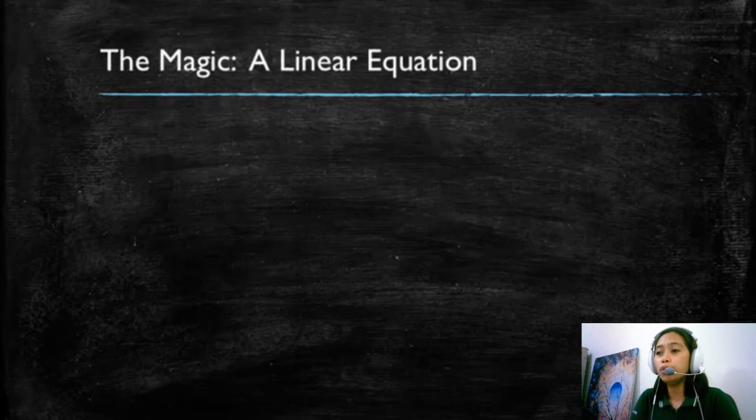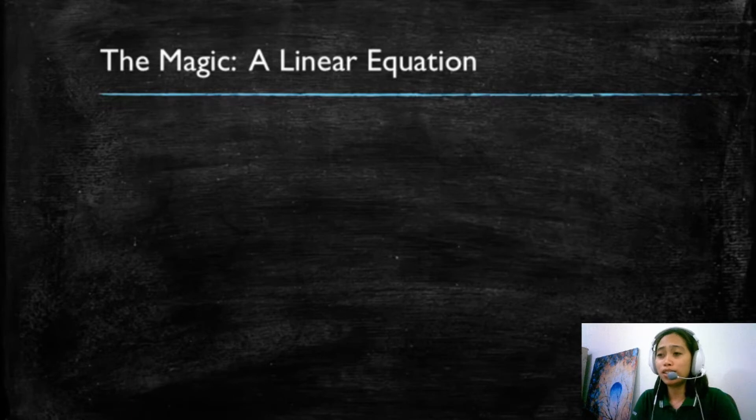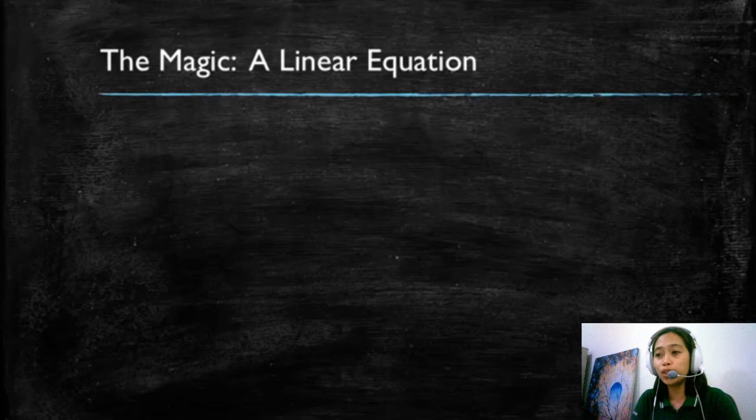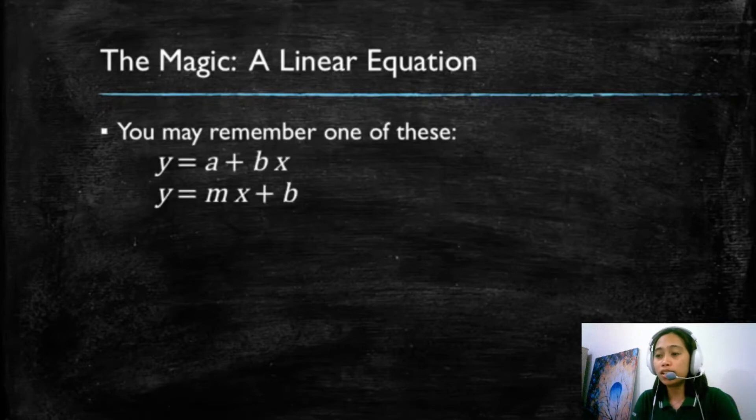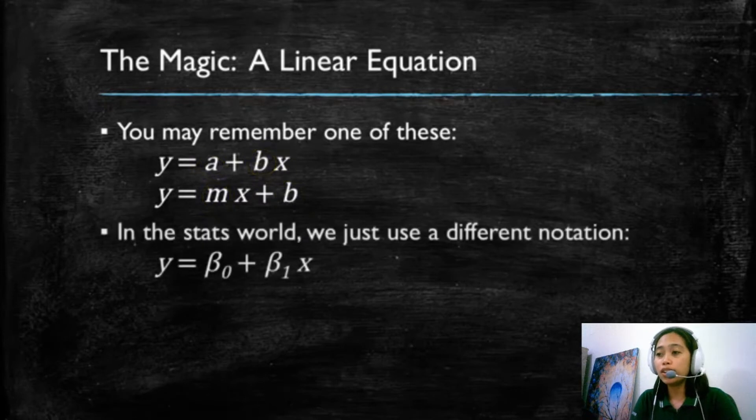So when we use simple linear regression models, we call them linear because the magic is that we're using a linear equation. And from your high school years, you might remember one of these where Y is a function of X and there's a term that is added to the function and another one that multiplies the X.